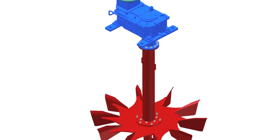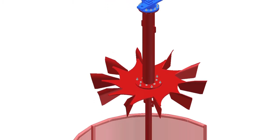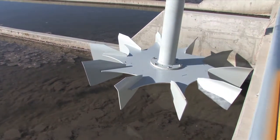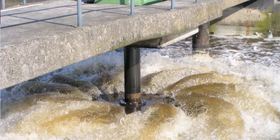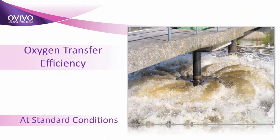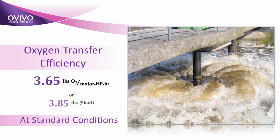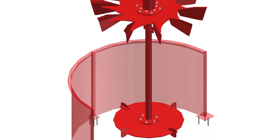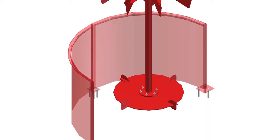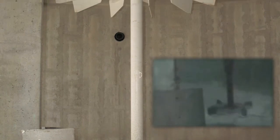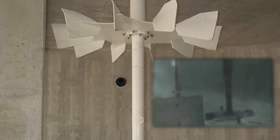Designed for both aeration and propulsion, the accelerator is the most efficient carousel system aerator on the market today. The specially designed surface aerator provides a minimum oxygen transfer efficiency of 3.65 pounds of oxygen per motor horsepower hour. The optional lower impeller allows for a deeper basin design and optimal flow loading turndown capabilities while still maintaining floor scouring velocities throughout the basin.